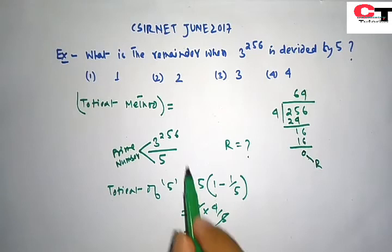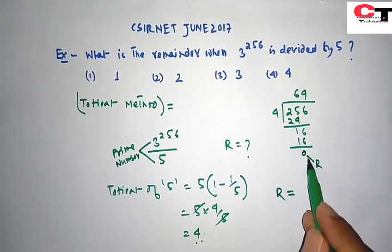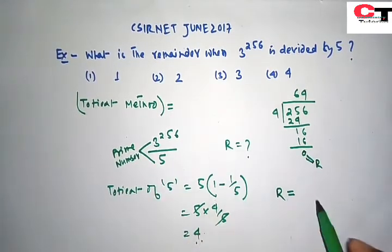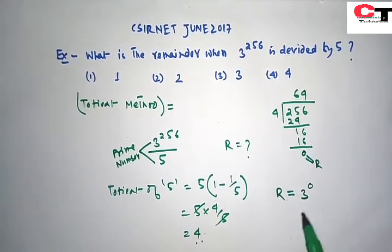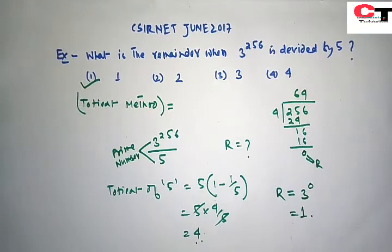This is the remainder. Therefore, the remainder will be 3 to the power of 0, equal to 1. The correct answer will be option 1. Thank you.